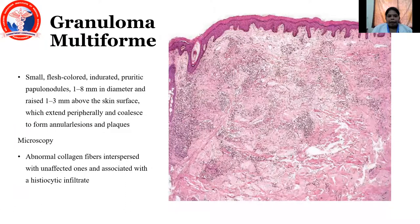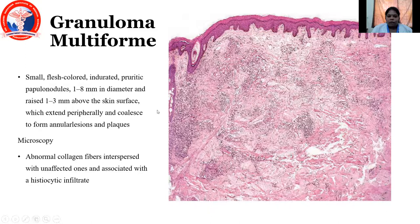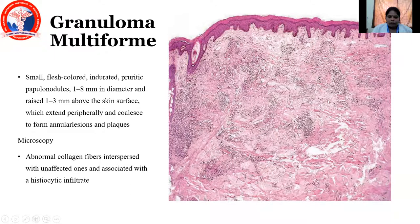Coming to granuloma multiforme, they are small, flesh-colored, indurated, pruritic papules 1–8 mm in diameter, raising about 1–3 mm above the skin surface. They extend peripherally and coalesce to form annular lesions on the legs. Microscopically, there are abnormal collagen fibers interspersed with unaffected ones, associated with histiocytic infiltration.